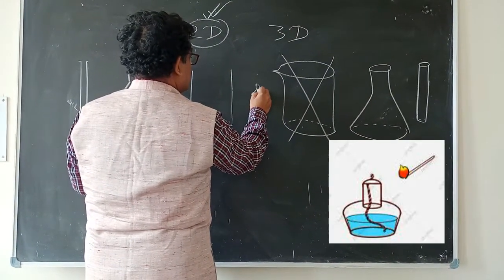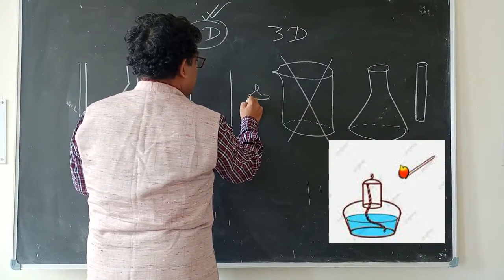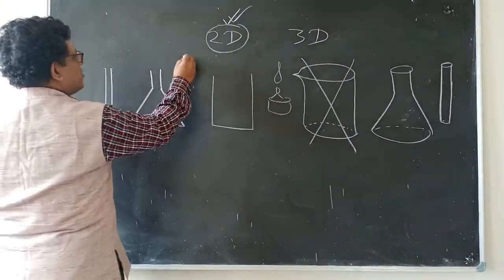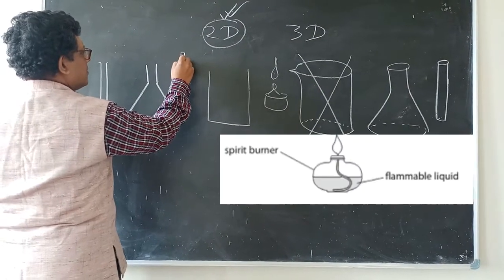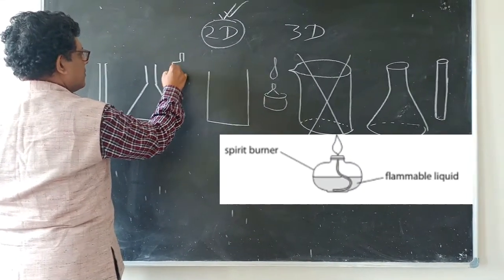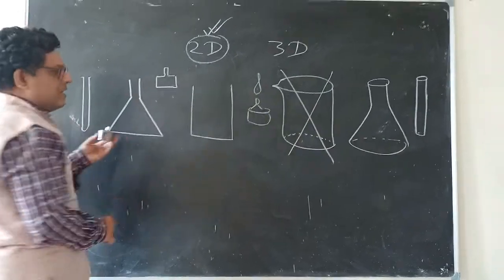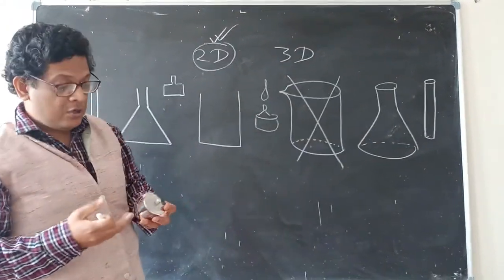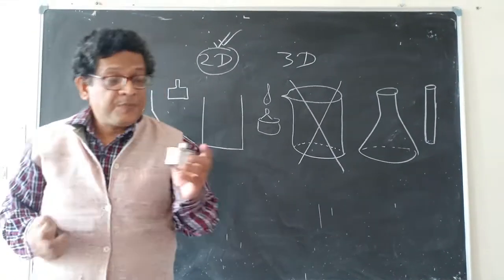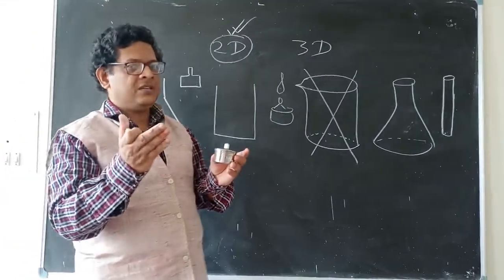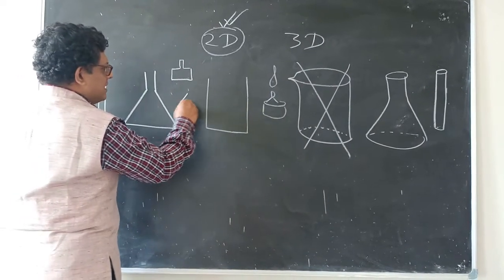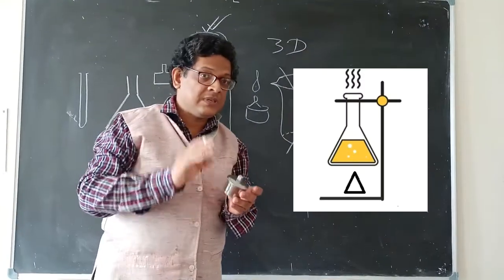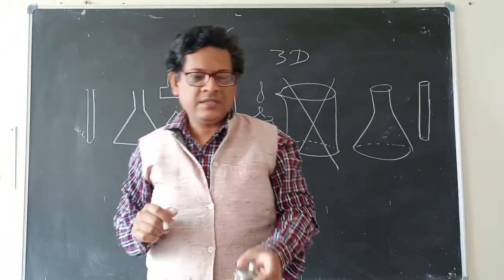In 2D, I simply draw the spirit lamp. Even sometimes in a diagram, we do not draw the spirit lamp at all. Spirit lamp means a source of heat. We can draw a symbol — that is a triangle. Inside the triangle, the symbol represents the source of heat, or heat itself.